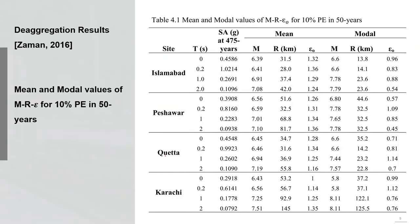More importantly, I have the de-aggregation results for this particular site. I know exactly which seismic sources govern the seismic hazard here. Seismic de-aggregation is a process that tells us what the contribution of different seismic sources is to the overall seismic hazard. For example, if my PGA value is 0.5g, the de-aggregation analysis will tell me that 70% of that 0.5g is coming from fault A, 20% from fault B, and 10% from fault C.